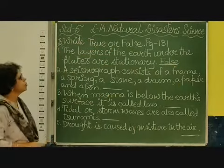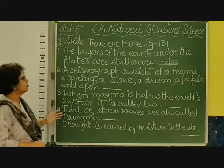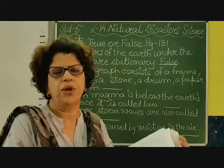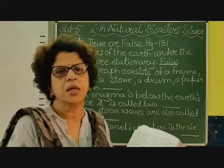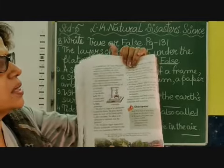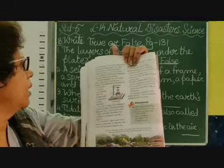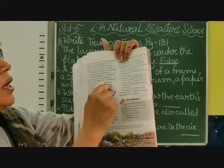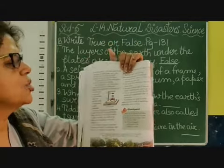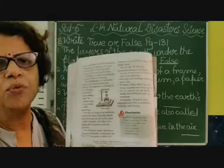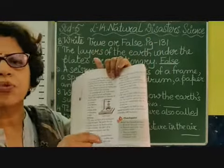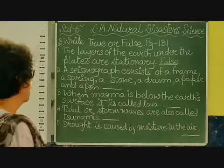Coming to the second one: a seismograph consists of a frame, a spring, a stone, a drum, a paper and a pen. You have seen this diagram of the seismograph in your science when we were doing social studies on natural disasters. As you can see, there is a drum, a pen, a paper, and then you have the frame. This is your frame where you have a spring and a stone. When the earth is shaking, the frame moves, the spring moves, and it is connected to the drum, which records the shaking of the earth. So it is true.